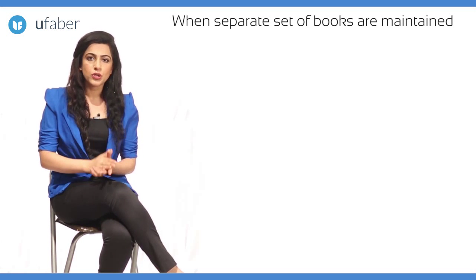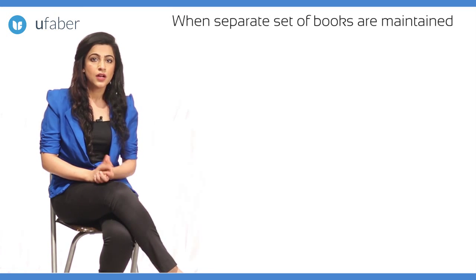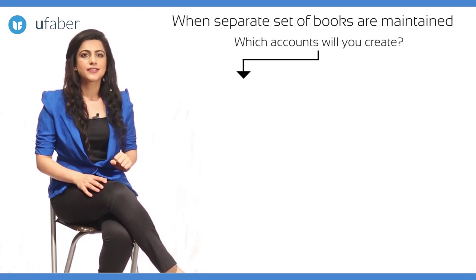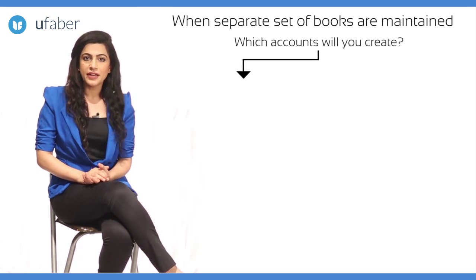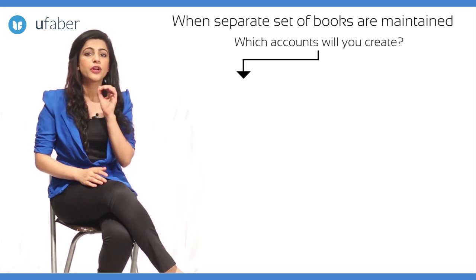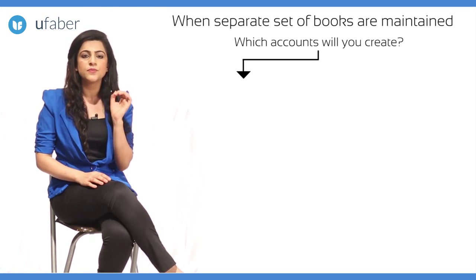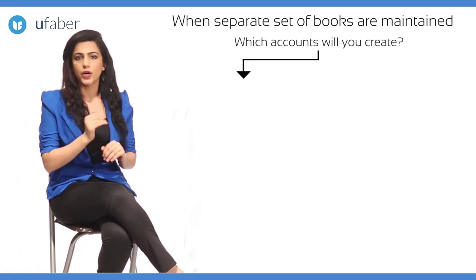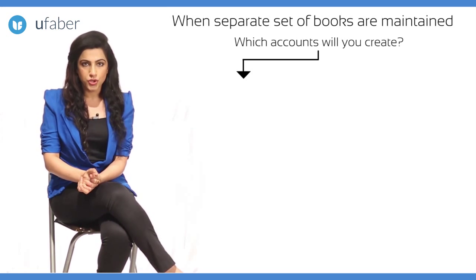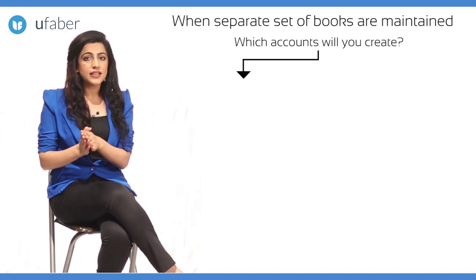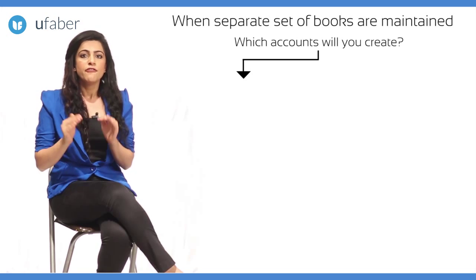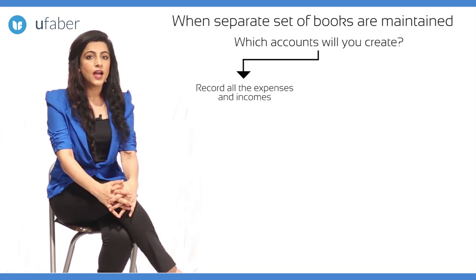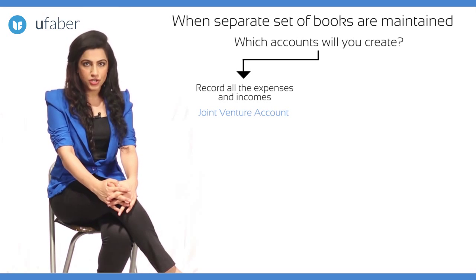When separate set of books are maintained, the dilemma is which accounts will you create? In case of consignment, we created a consignment account to record all expenses and incomes of the consignment business. Which account do we create in joint venture? We are maintaining the accounts for joint venture, so the first account will be one where we can debit all expenses and credit all incomes. This account is called the joint venture account.